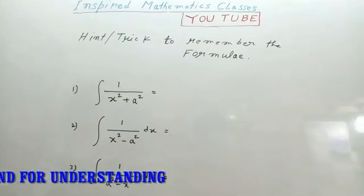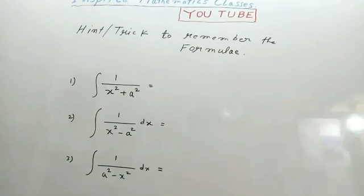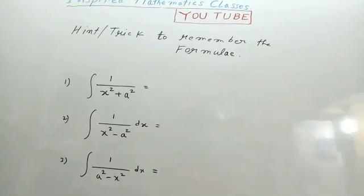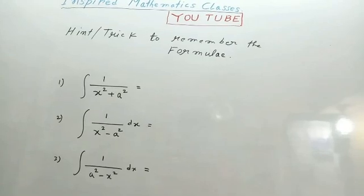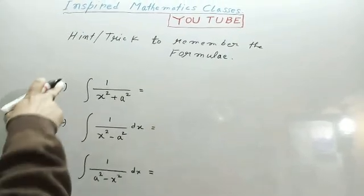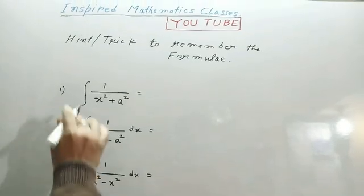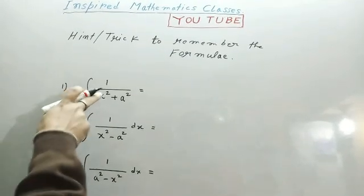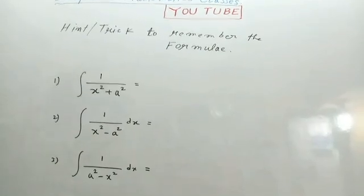Here are six formulas which are very important for learning the calculus. First three formulas are this. Integral 1 upon x square plus a square. What is this formula? How will you remember that?